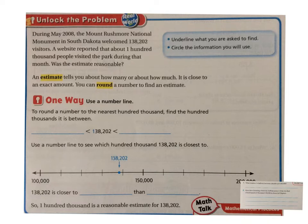The first thing we have to figure out is what is the question asking. The question is asking us to determine whether or not that estimate was reasonable. The important information — let's go ahead and circle it together — is that all together the exact number was 138,202 visitors, but that the website reported about 100,000 people. We have to figure out: is that a good estimate?